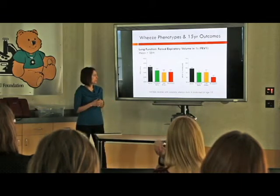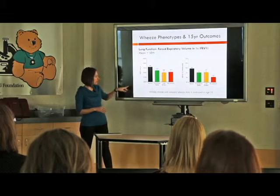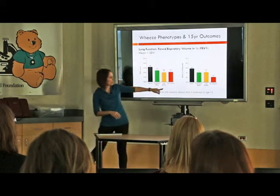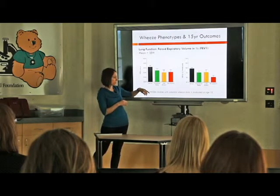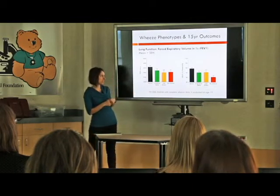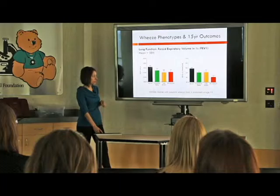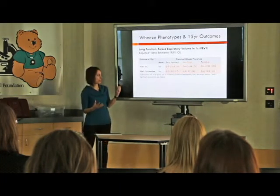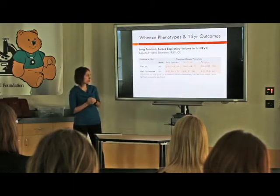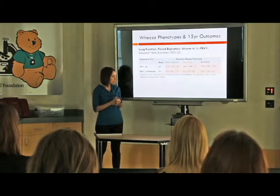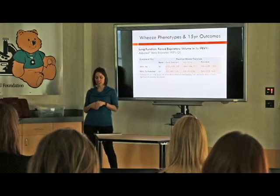We also looked at lung function. Both graphs show forced expiratory volume in one second — FEV1 — the left showing the raw value and the right showing the percent predicted value corrected for age and sex. There is a decline in lung function for all of the wheezing children, especially those wheezing persistently in early life. After adjusting for the intervention study design and other risk factors, we still see significant deficits: transient early wheezers had a 5% reduction in percent predicted lung function, and persistent wheezers had almost a 10% reduction.